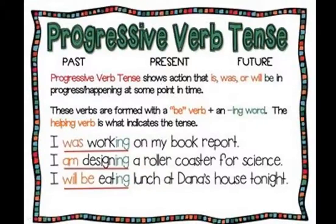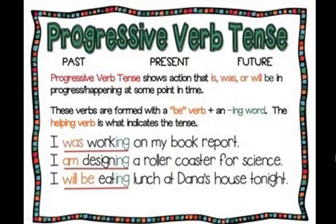Before adding -ing, we have to add the verb. In the next example: 'I am designing a roller coaster for the science fair.' Here also the word 'designing' has the -ing added. Before 'designing', we have added 'am' — 'I am designing' — so it is in the present progressive verb tense. Here also we have added the verb before adding the -ing.